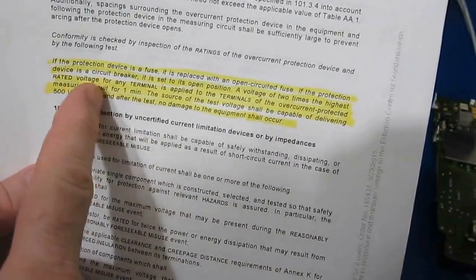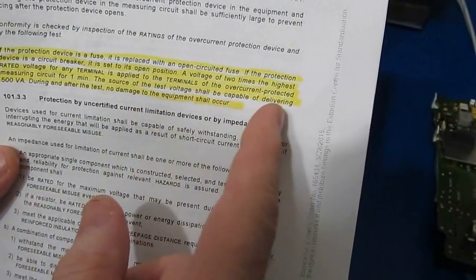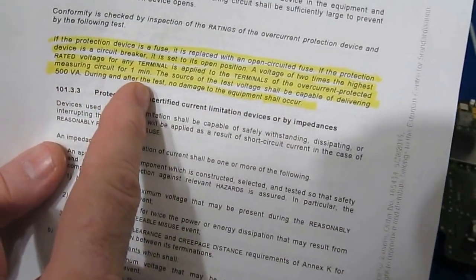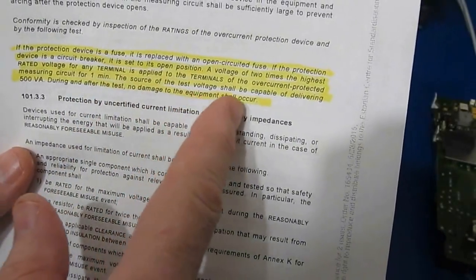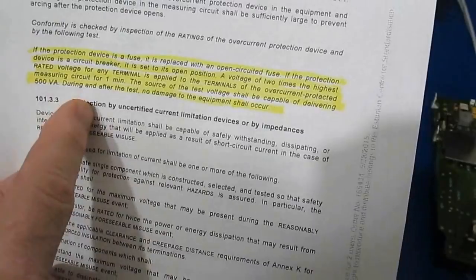The voltage of two times the highest rated voltage for any terminal is applied to the terminals of the overcurrent protected measuring circuit for one minute. The source of the test voltage should be capable of delivering 500 VA.